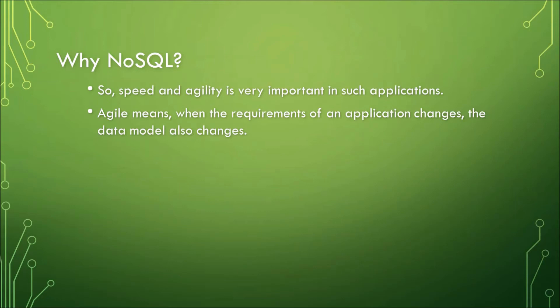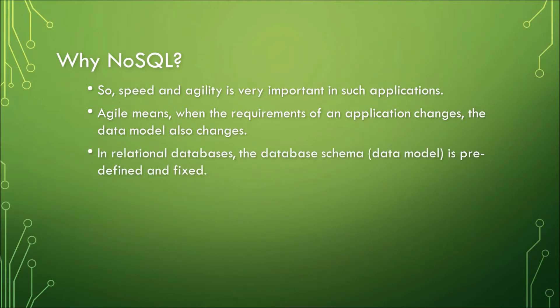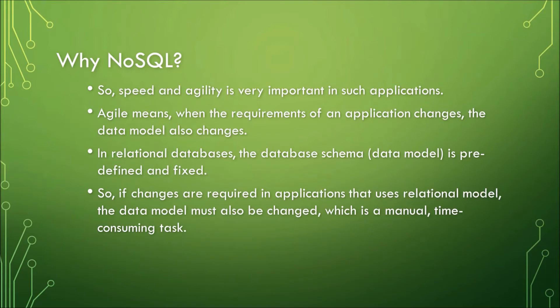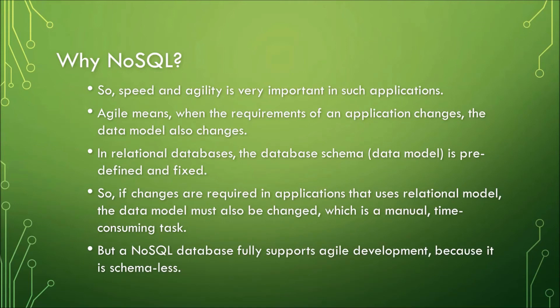Agility is associated with agile. And agile means when the requirements of an application change, the data model also changes. In relational databases, the database schema or the data model is predefined and fixed, while in non-relational databases, it is not. So, if changes are required in applications that use this relational model, then the data model must also be changed, which can be time-consuming. But with NoSQL, a NoSQL database fully supports agile development because it is schema-less, making it best for handling big data and large changes in many organizations.